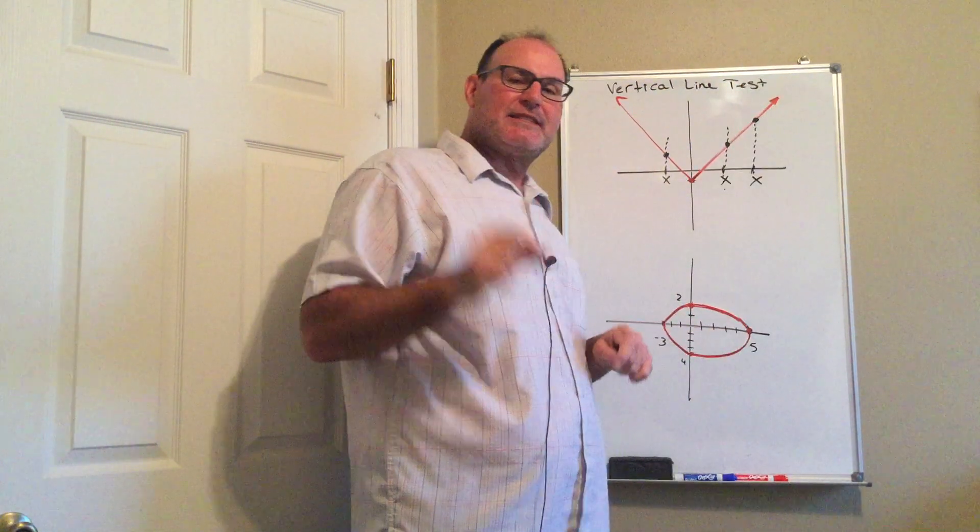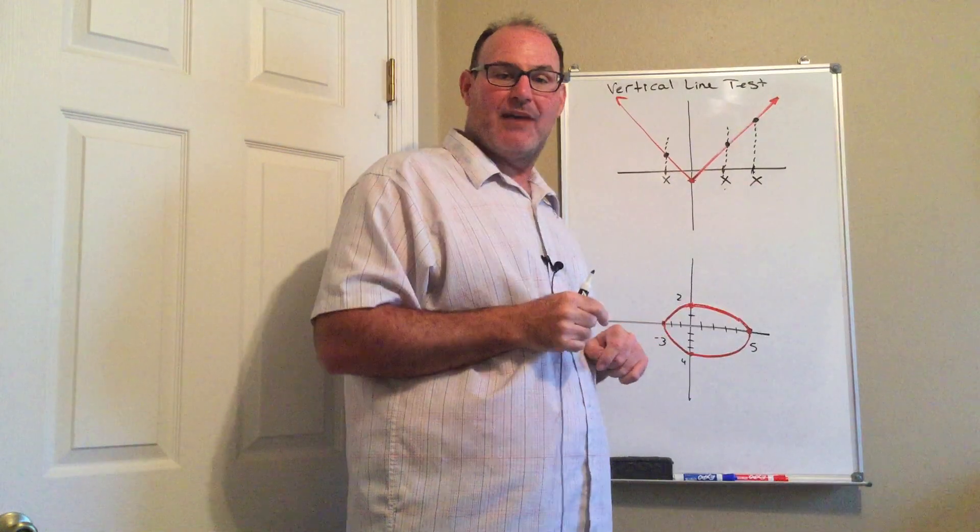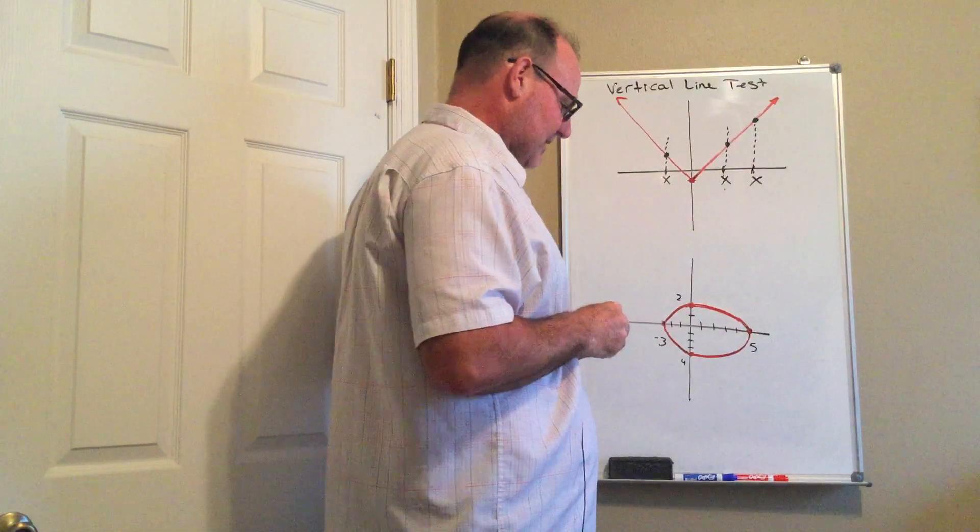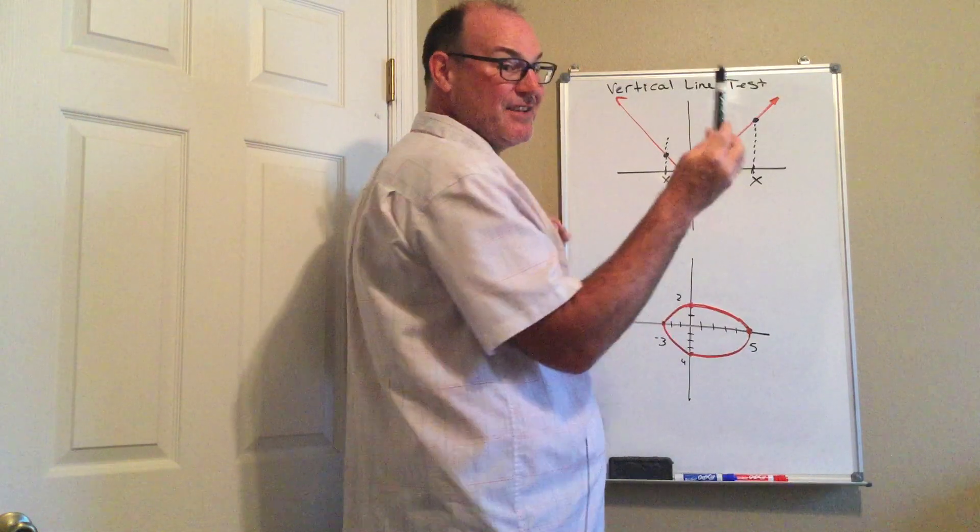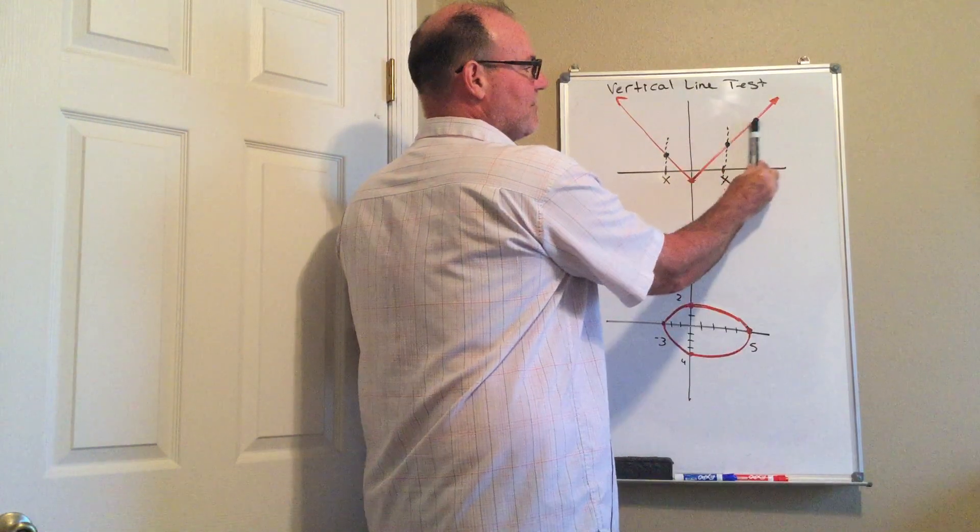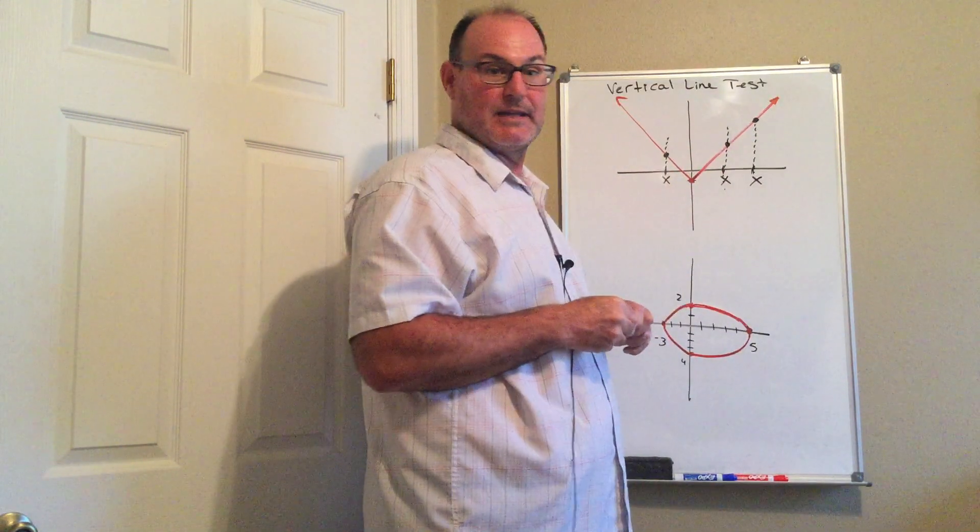If a vertical line hits the graph one point every time, it is a function. So my absolute value, because as I take my vertical line, the pen is going to be the best vertical line I have, it hits the graph one point every time I lay the vertical line down.